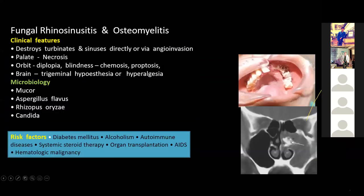Apart from bacterial and viral causes, we also see fungal rhinosinusitis. It can be seen in the acute phase but is most commonly seen in chronic rhinosinusitis. Fungal infection tends to be invasive or non-invasive. The most common fungi present in the sinus include Mucor, Aspergillus, Candida, and Rhizopus.